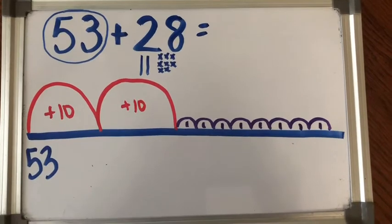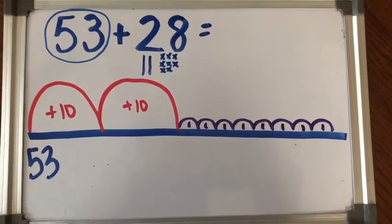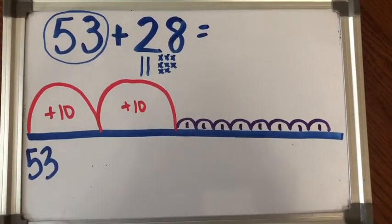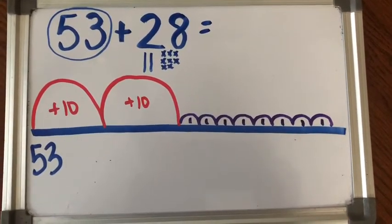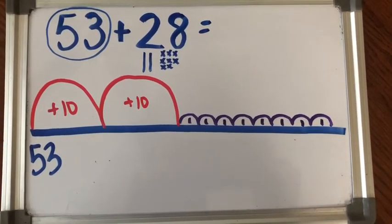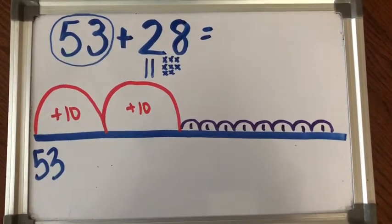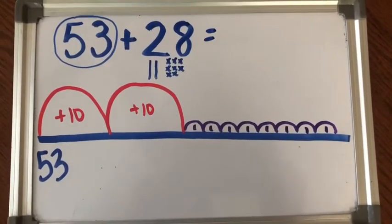And then I get 63, and I have to add 10 more, and I get 73. And then I have to count by 1s for the rest of those little hops. Are you ready?